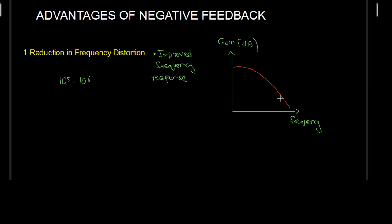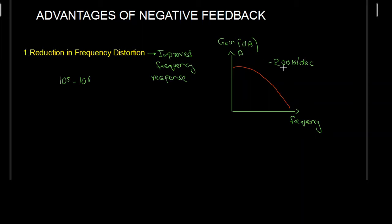The gain varies and fluctuates with high frequency. We do not want this to happen. We want the gain to be stable and constant with increasing frequency. Because of the internal compensation circuitry, the gain decreases at a rate of minus 20 dB per decade.